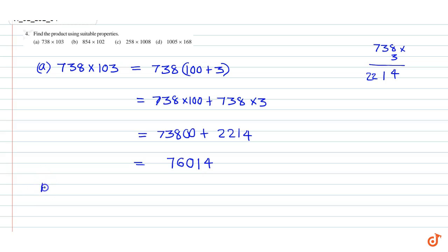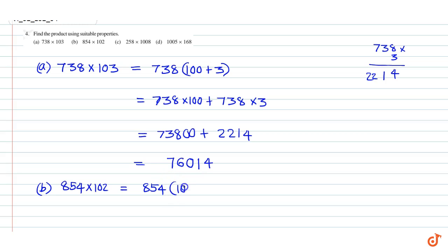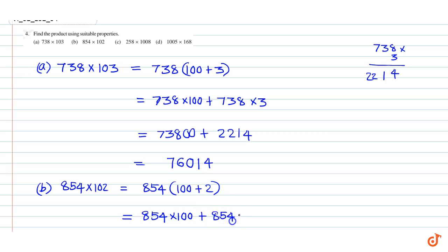Part B: 854 into 102. This is equal to 854 into 100 plus 2. Using distributive property we can write this is equal to 854 into 100 plus 854 into 2.